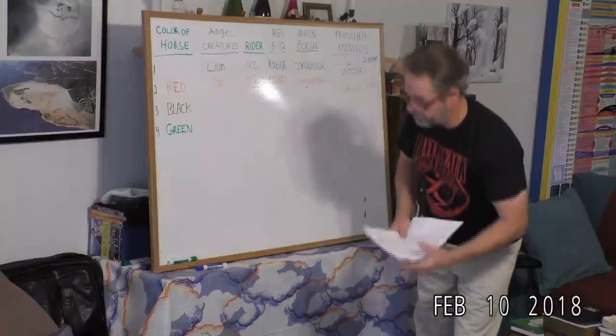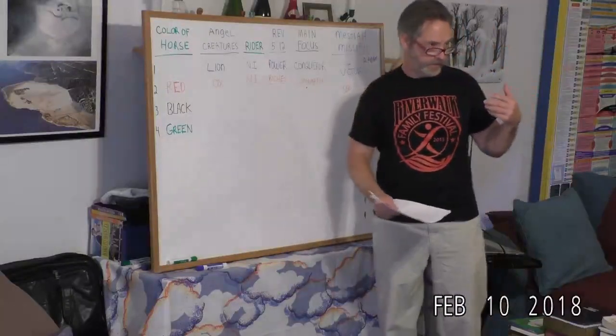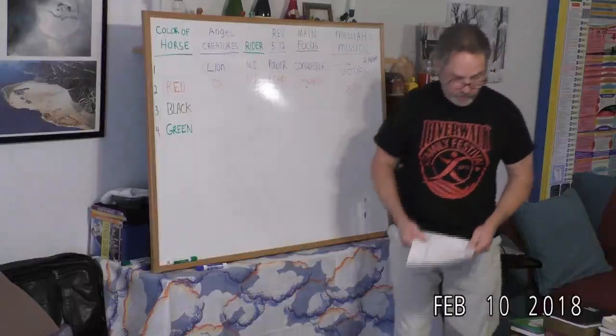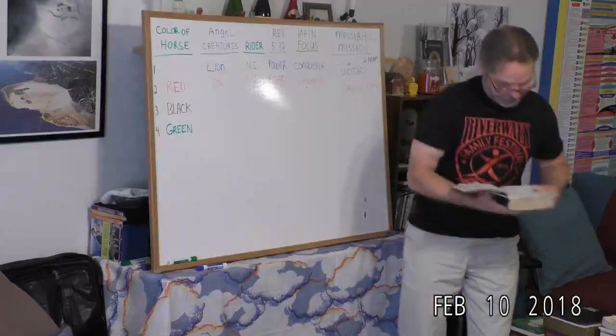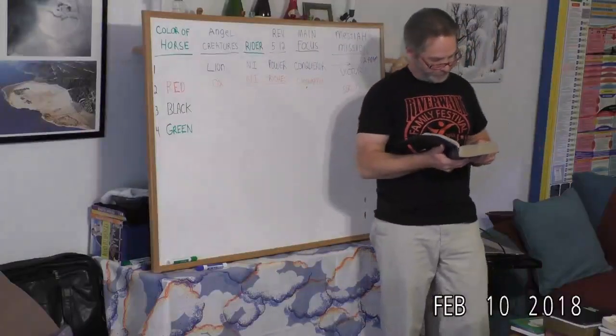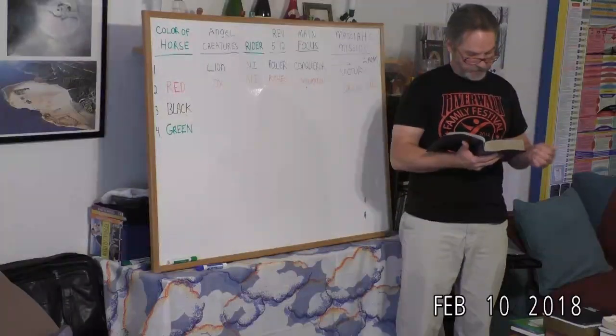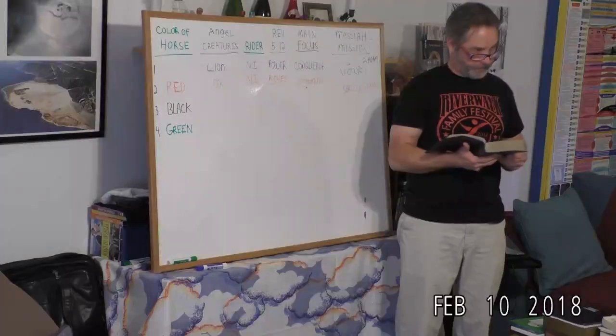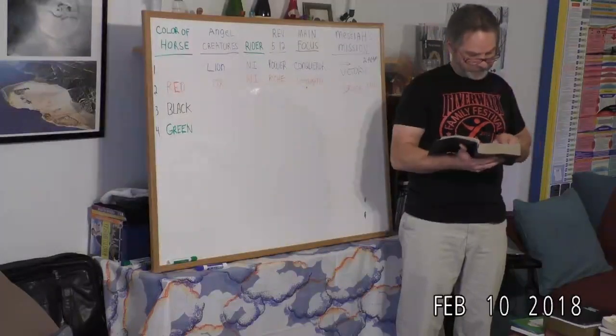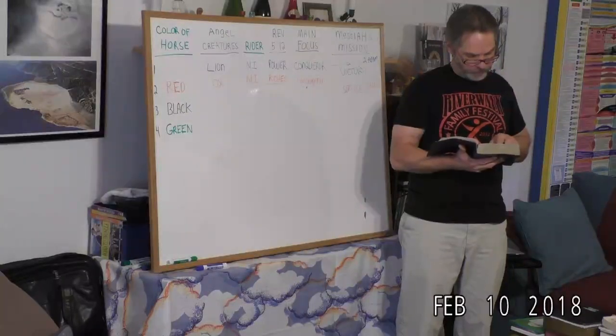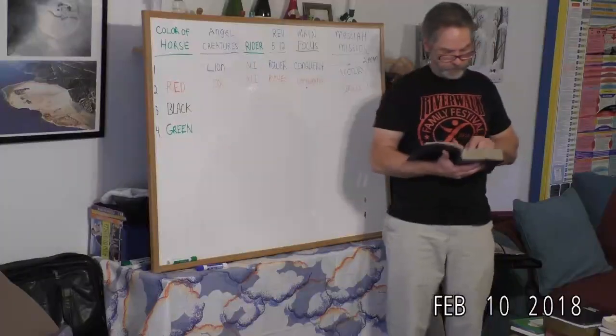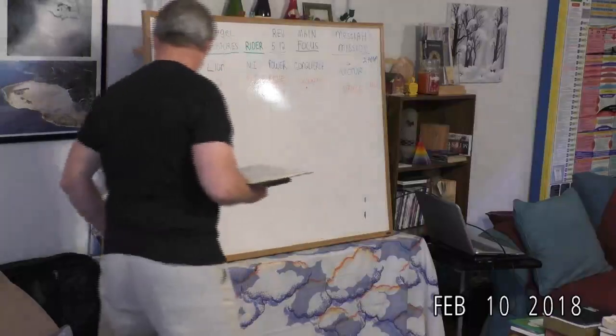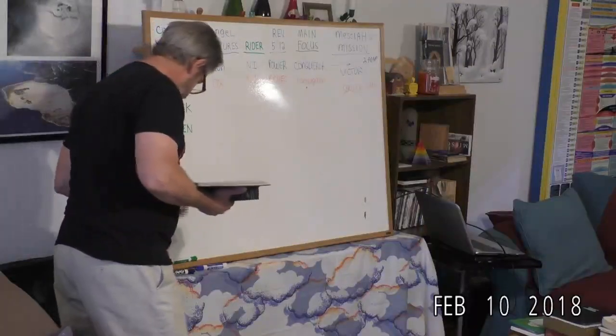Now we're stepping into new territory with the next horse, the third seal. When he had opened the third seal, I heard the third beast say, Come and see. And I beheld and lo a black horse, and he that sat on him had a pair of balances in his hand. And I heard a voice in the midst of the four beasts say, A measure of wheat for a penny, and three measures of barley for a penny, and see thou hurt not the oil and the wine.